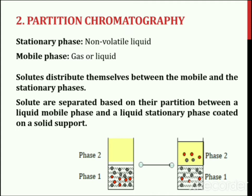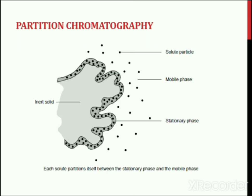Partition chromatography: in partition chromatography, a non-volatile liquid is used as a stationary phase, while the mixture to be separated is carried by gas or liquid as the mobile phase. Solutes distribute themselves between the moving and the stationary phases. The more soluble component remains in the mobile phase and tends to reach the end of the chromatography column first. In this technique, solutes are separated based on their partition between a liquid mobile phase and a liquid stationary phase coated on a solid support. The following diagram shows the partition of solute particles between the mobile phase and stationary phase.